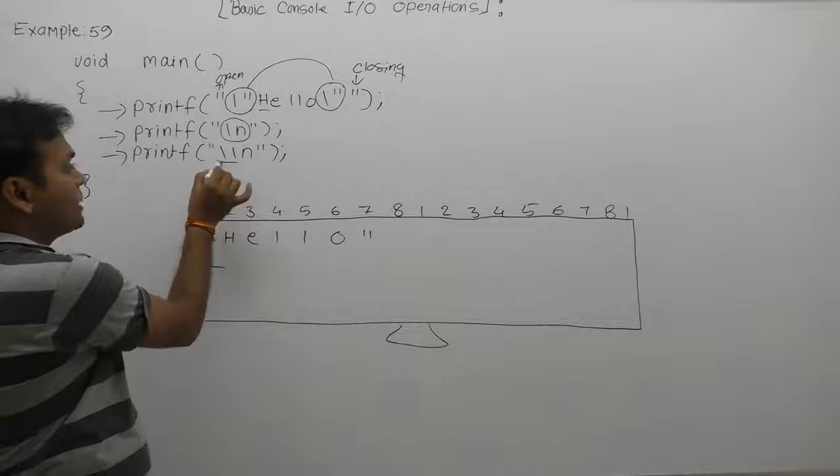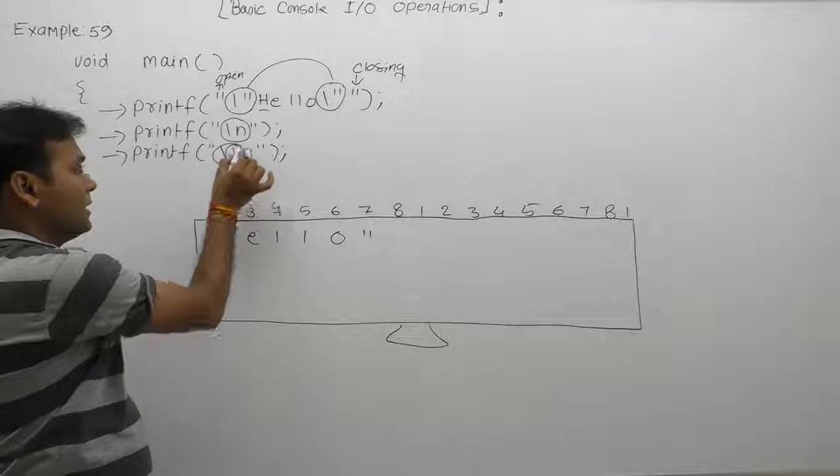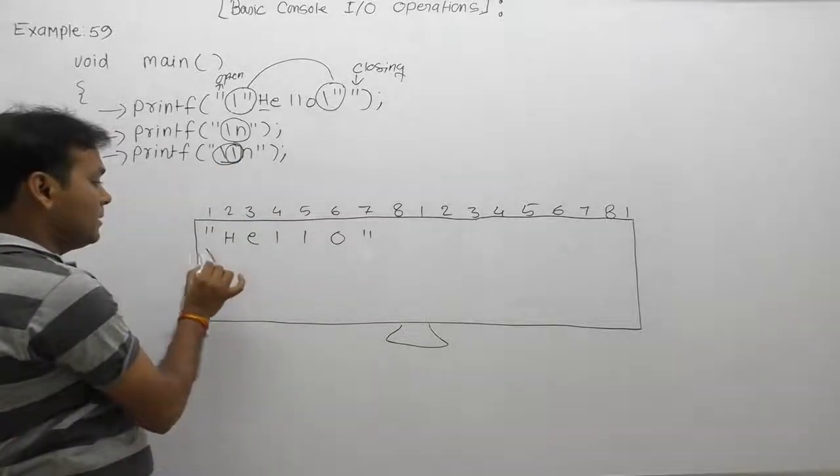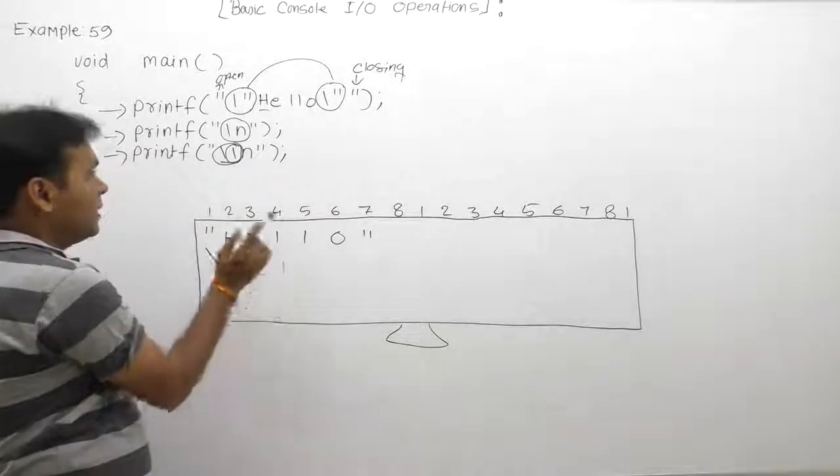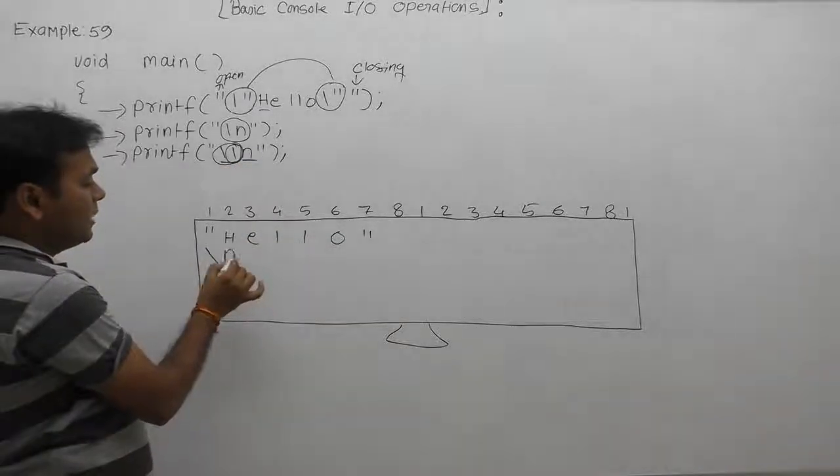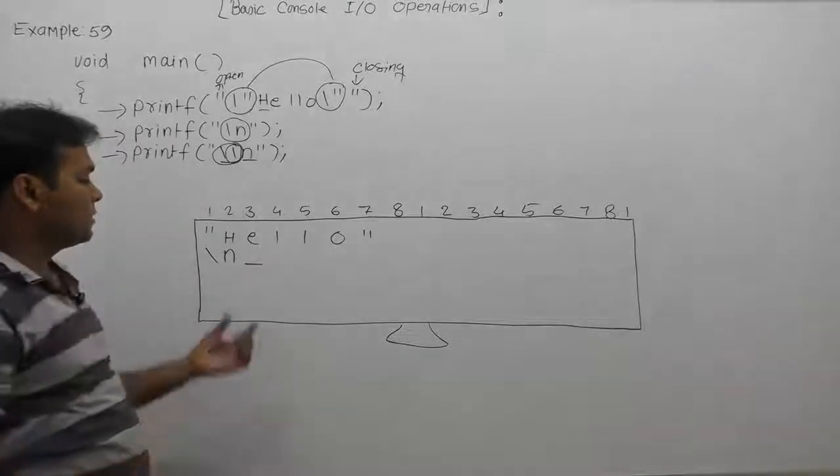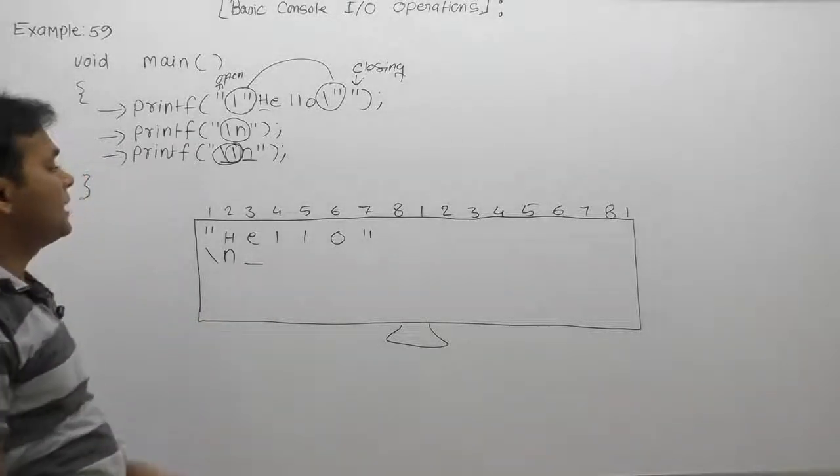According to third printer, first slash is an escape sequence character, next is an ordinary character, means it is simply single character. Therefore, it will print only slash. Then now n becomes single character as ordinary, therefore n is got printed. Finally, in that case, there are two characters, two symbols are displayed: slash n.